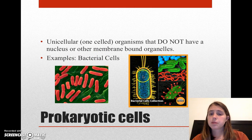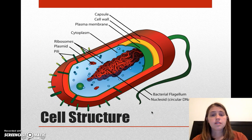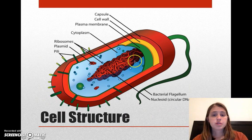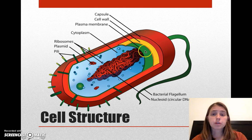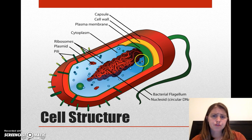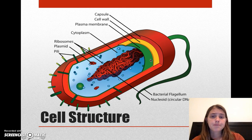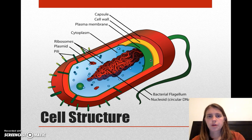Here are a couple of pictures of some bacteria. Here's the basic structure: we have an outer area, little hairs that stick out of it, a couple of layers on the outside, our chromosomes, a lot of free area, and a couple more pieces of chromosomes just randomly floating around. Not very organized at all.